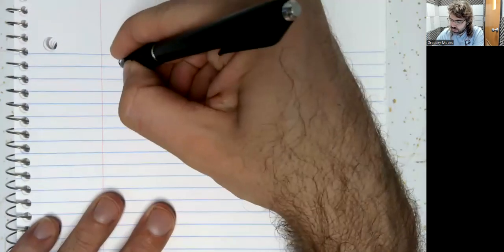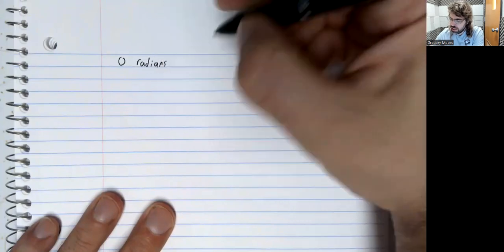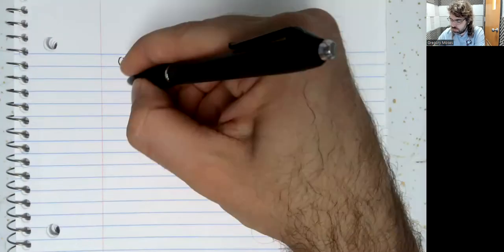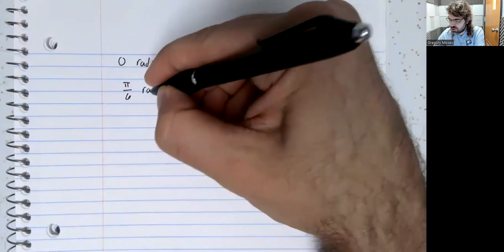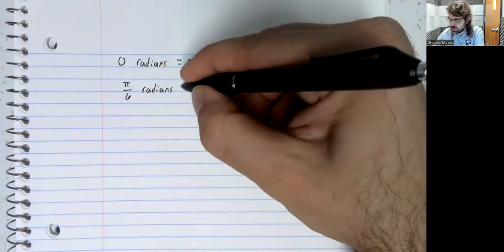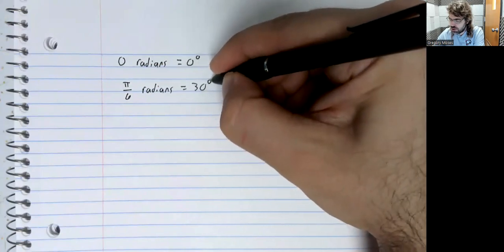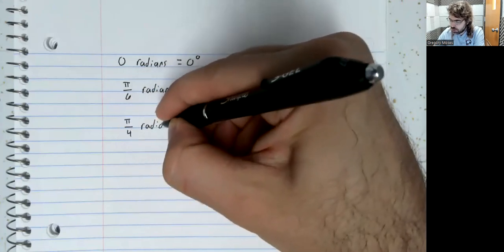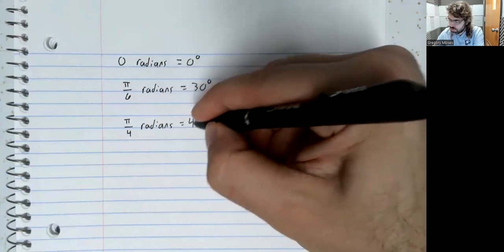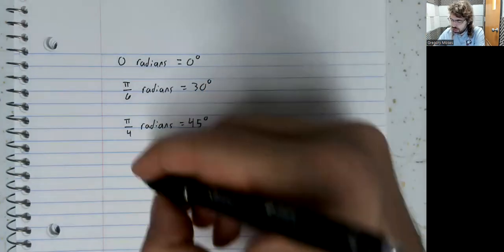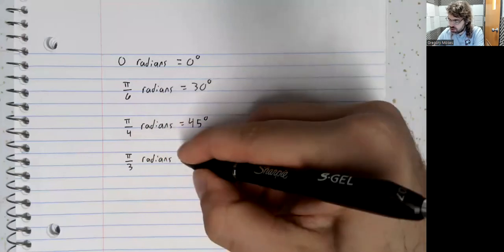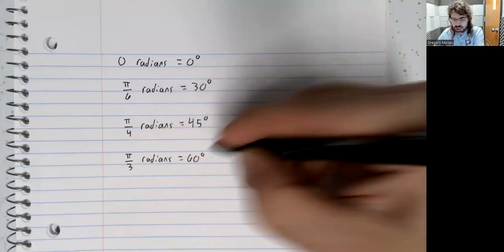The really famous ones: zero radians is zero degrees, then pi over 6 radians is 30 degrees, pi over 4 radians is 45 degrees, and pi over 3 radians is 60 degrees.